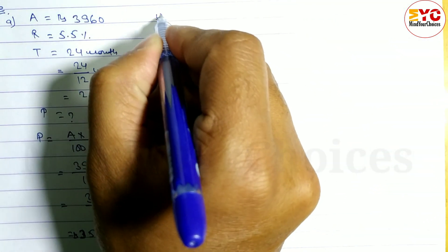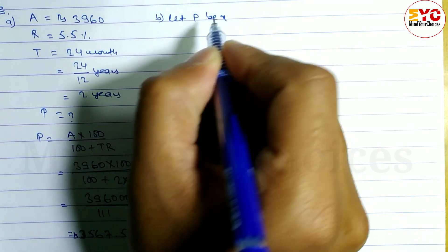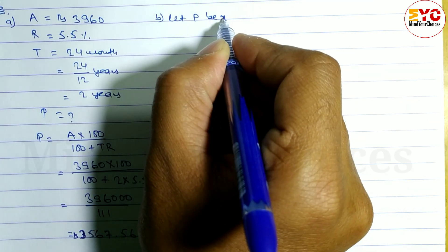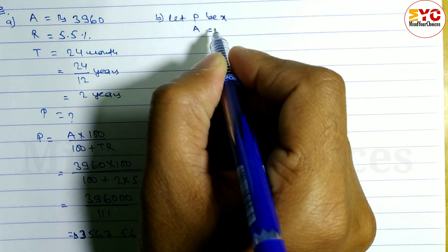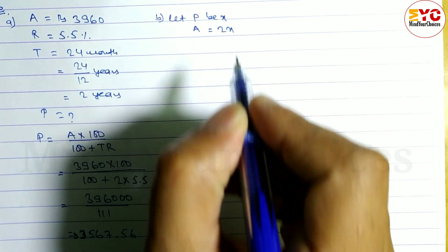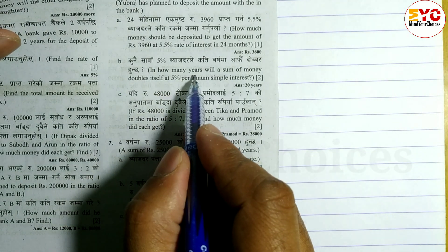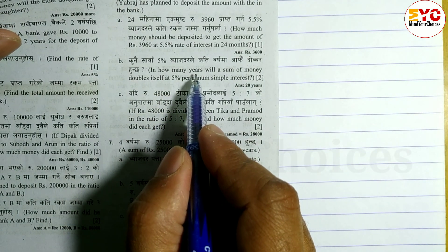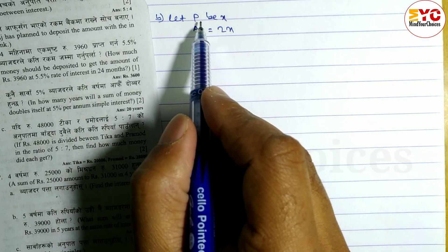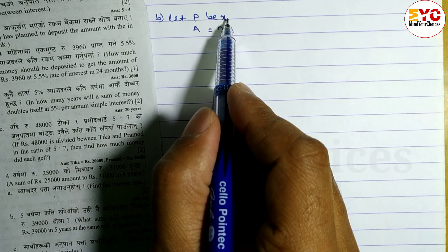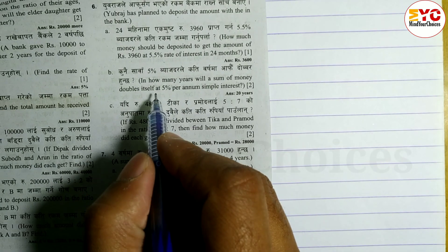B number ma — let principal be X. Principle paisa kati deposit gareko cha? X. Ra paisa ke huncha — double huncha. So amount is equal to 2X. Yaan question hunu — in how many years will the sum of money double itself? Sum of money X sabai amount ke huncha? 2X huncha.